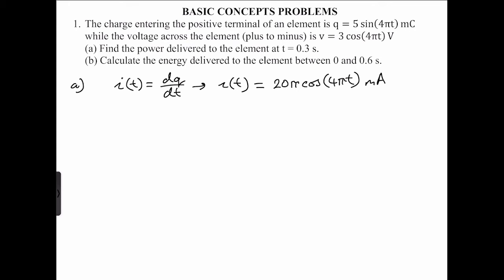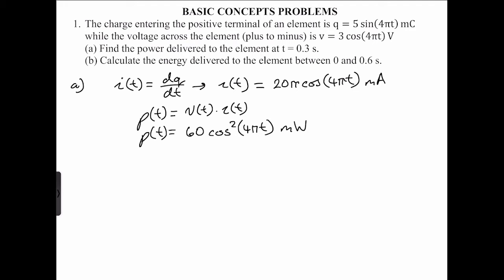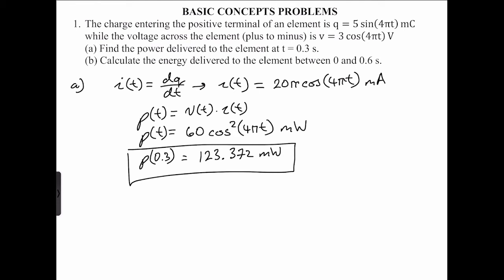We can then state that power p(t) = v(t) × i(t), which equals 3 × 20 = 60 cosine squared(4πt), in milliwatts. That's the equation for power. If we evaluate that at 0.3 seconds, we get approximately 1.373 milliwatts. So that's the instantaneous power.